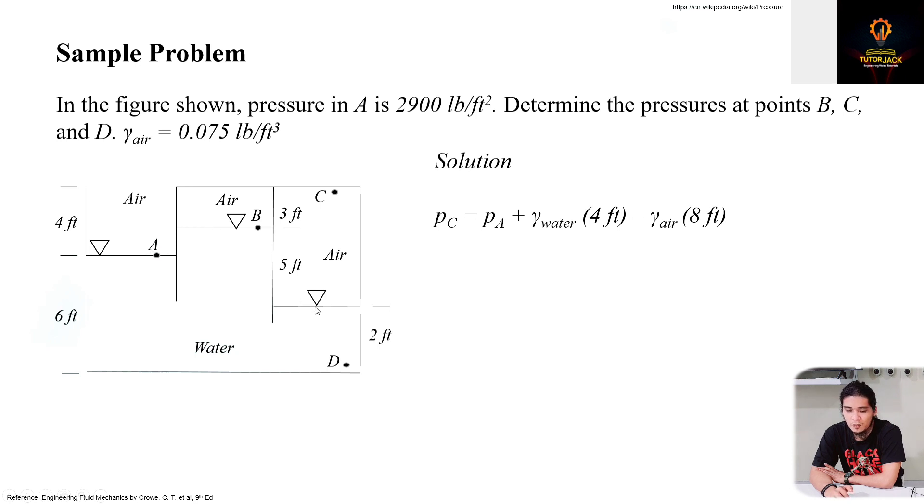So from A to this particular point, that's a decrease in elevation. Therefore, that's addition. So PA plus, this is the pressure at this particular point. Unit weight times elevation, or change in difference in elevation. So let's do it directly.